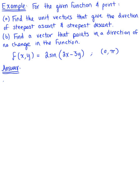For the given function and point, find the unit vectors that give the direction of steepest ascent and steepest descent. Then find a vector that points in the direction of no change in the function. We have the function f(x,y) = 2 times sine of 2x minus 3y, and we have the point (0, π).